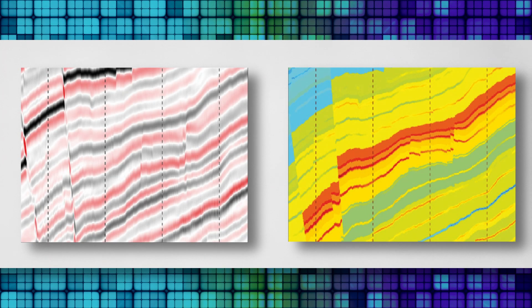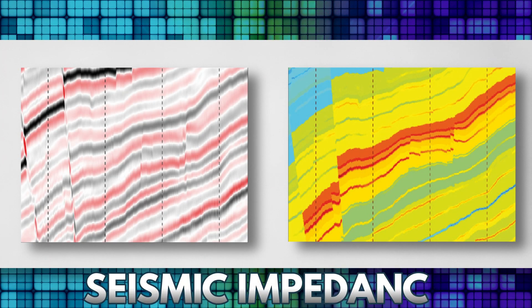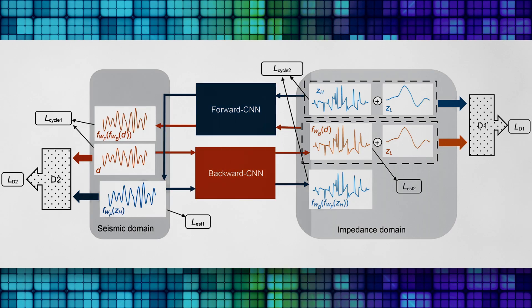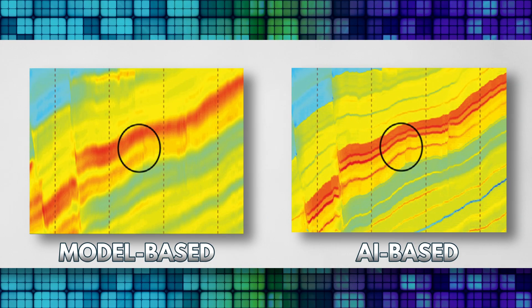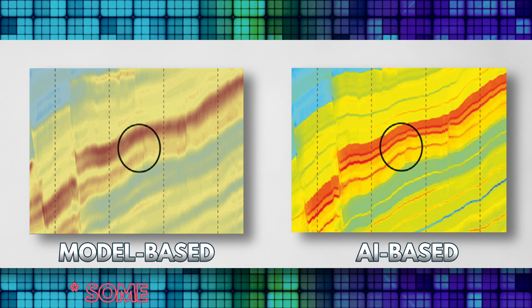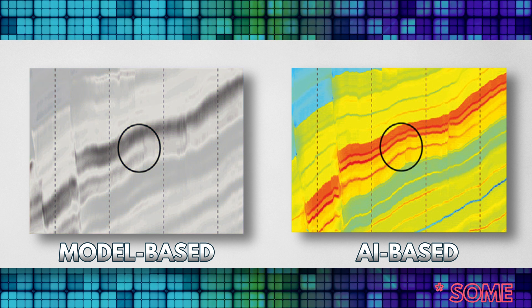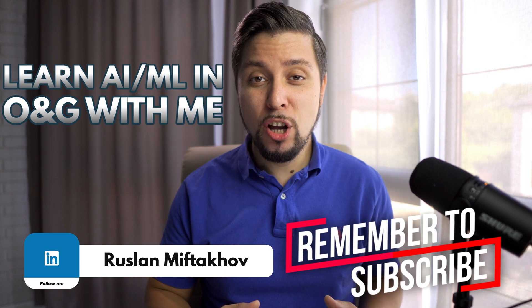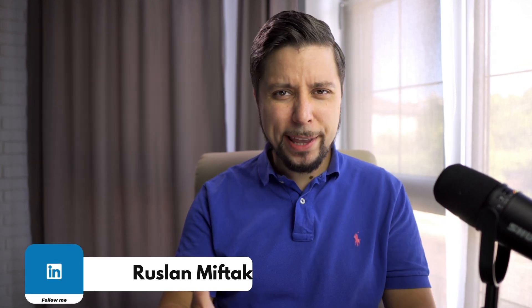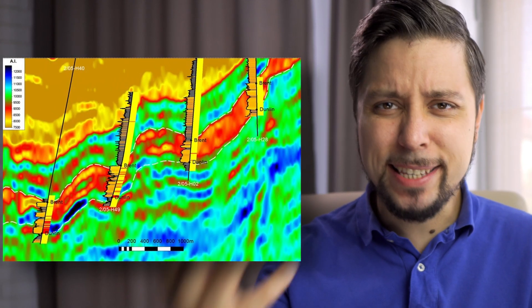Today we are talking about AI-based seismic impedance inversion. I will show you how advanced neural network architecture gives better results than model-based and data-driven inversion. My name is Ruslan and I'm here to help you learn machine learning in oil and gas. It is widely known that seismic impedance inversion can be used for reliable forecasting of reservoir properties and assisting in stratigraphic interpretation.